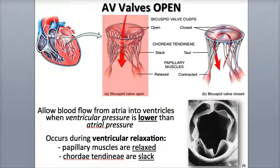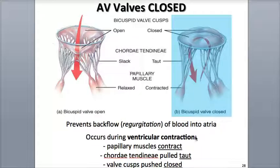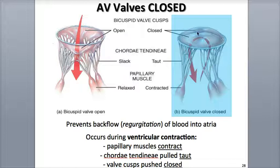Here we see a view of the open valve. During atrial contraction, the ventricles are relaxed, as are their papillary muscles. The chordae tendineae between the cusps of the valves and the papillary muscles are slack — loose. During ventricular contraction, the papillary muscles contract and pull the chordae tendineae taut, or tight, which pulls the cusps of the valves together.